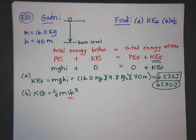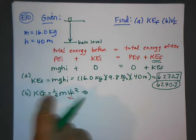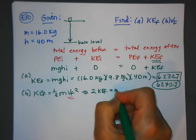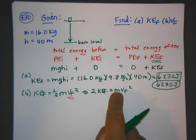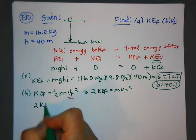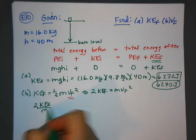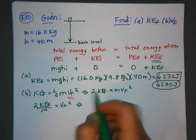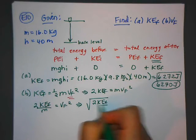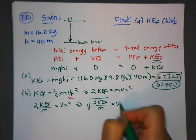So what I'm going to do is rearrange the equation to solve for the unknown in terms of the known, so I don't make a mistake. I multiply both sides by two, divide by m, and then I take the square root of both sides. So the square root of 2KEf over m is equal to VF.